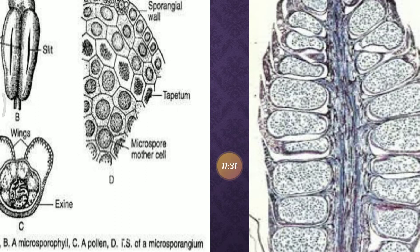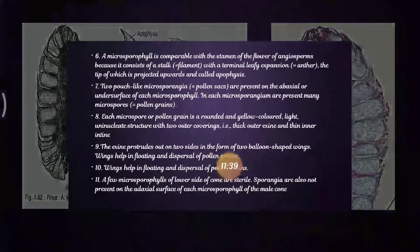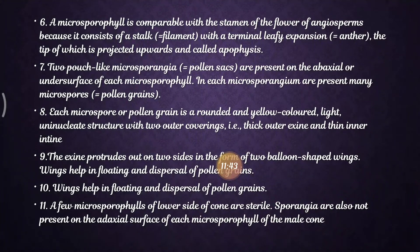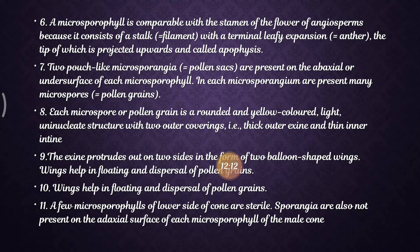Each microsporangium consists of a mass of archesporial cells surrounded by three to four layered wall cells. The microsporophyll is comparable to the stamen of an angiosperm flower — like in Hibiscus, it consists of a stalk and filament with a terminal leafy expansion (the anther). The tip projected upward is the apophysis, and two pouch-like microsporangial walls are present on the abaxial or under surface of each microsporophyll.